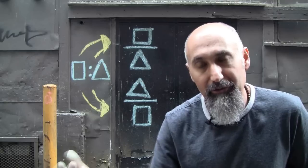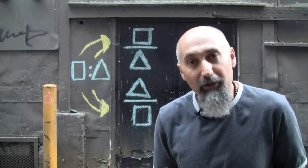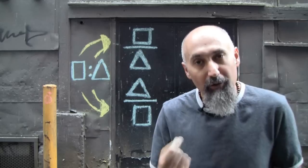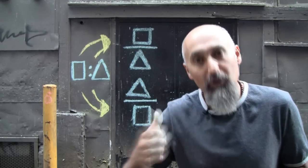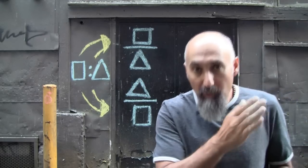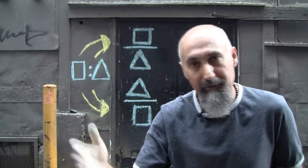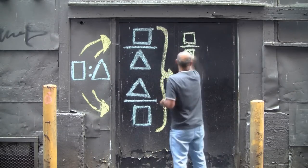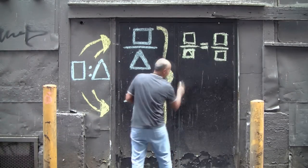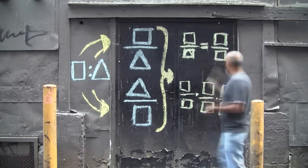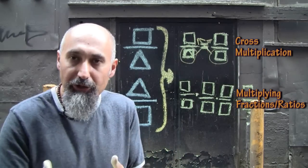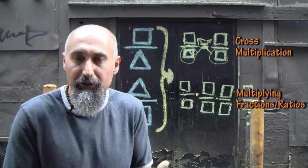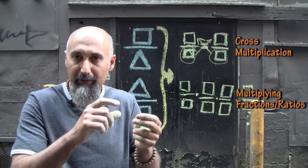If what you're trying to do is easy and requires only one jump, you're going to use cross multiplication. If what you're trying to do is harder and requires multiple jumps, you're going to multiply a whole bunch of fractions together. So there are two methods for unit conversions: cross multiplication for single-step conversions, and multiplying fractions together for multi-step conversions.